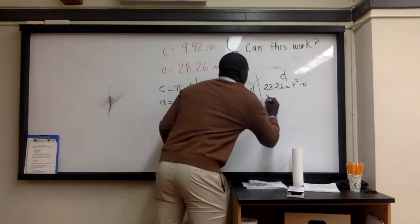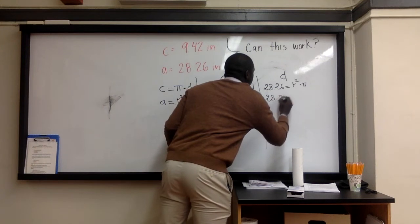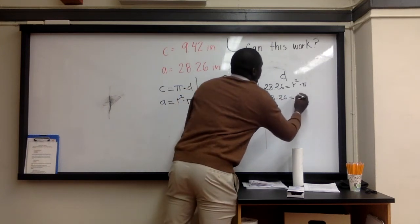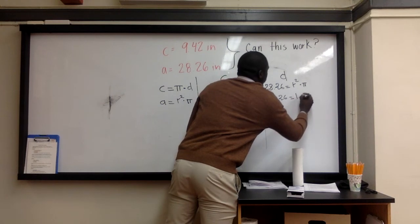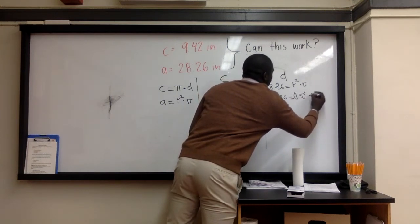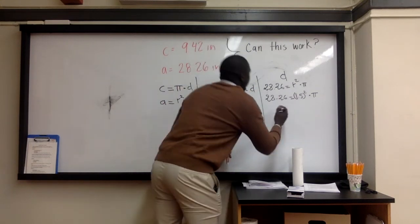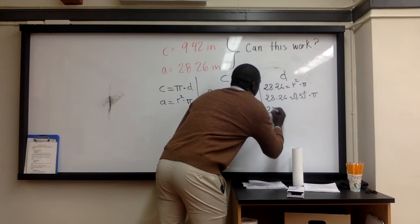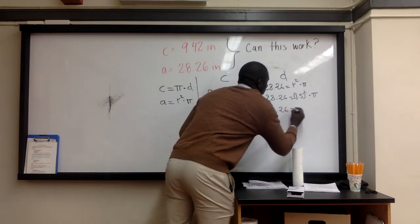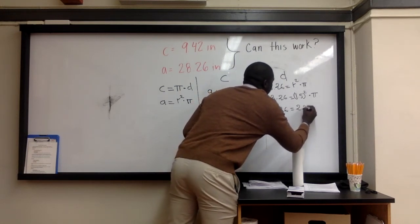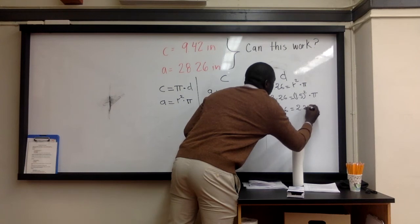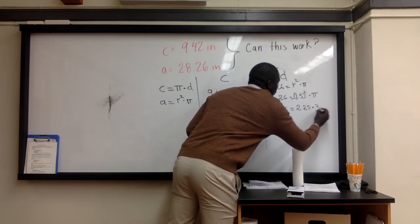28.26 is equal to R squared times π. Now, pi again is simply 3.14. So I'll say 2.25 times 3.14.